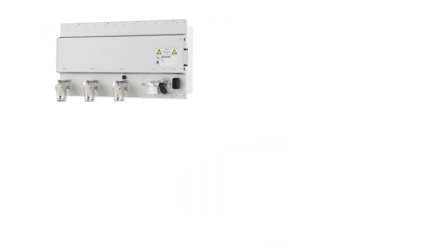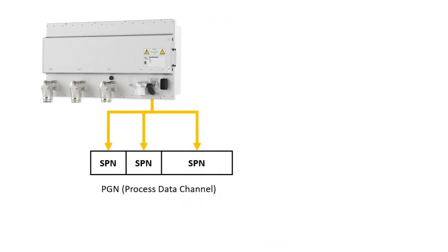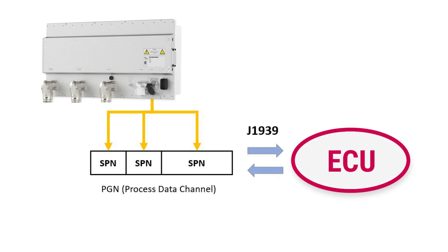In the app, each inverter parameter serves as its own individual SPN. These can be dragged into the data channels, and building these up, they can be structured into customized PGNs.